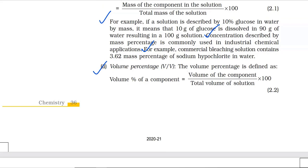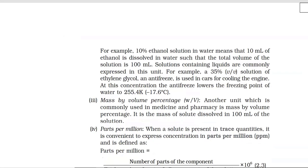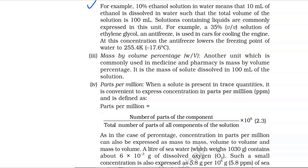Number 2: Volume percentage. The volume percentage is defined as: volume percent of a component equals volume of the component divided by total volume of solution, multiplied by 100. For example, a 10% ethanol solution in water means that 10 mL of ethanol is dissolved in water such that the total volume of the solution is 100 mL. Solutions containing liquids are commonly expressed in this unit. For example, a 35% solution of ethylene glycol antifreeze is used in cars for cooling the engine. At this concentration, the antifreeze lowers the freezing point of water to 255.4 K, that is minus 17.6 degrees Celsius.